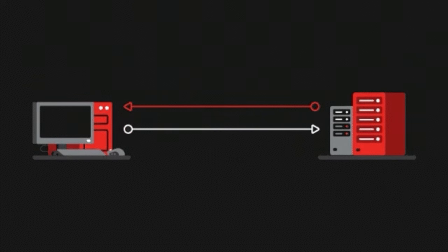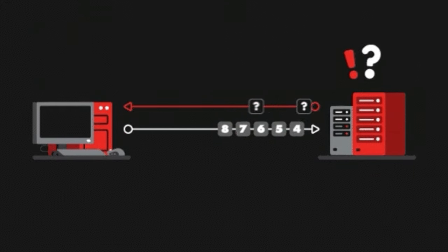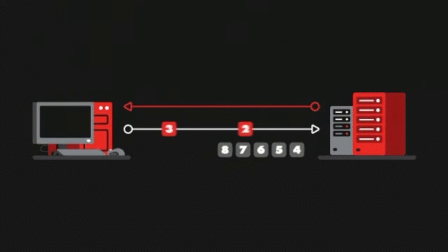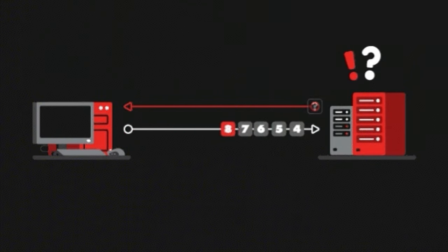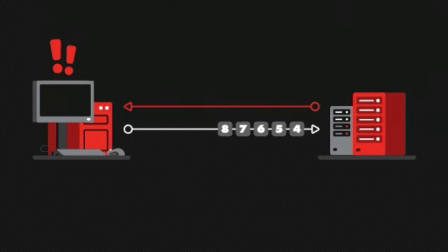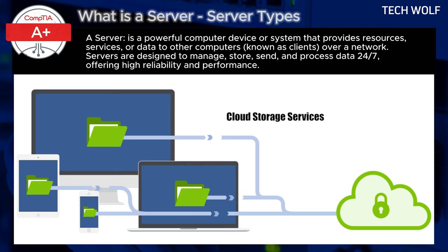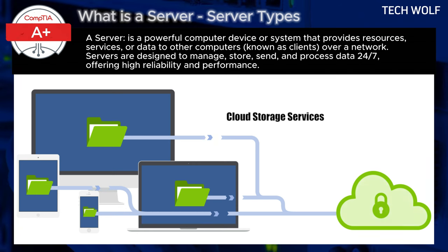Security servers focus on securing the network, managing firewalls, VPNs, intrusion detection, and other security protocols. Streaming servers deliver live or pre-recorded streaming media like video or audio to client devices over the internet. Load balancer servers distribute network traffic across multiple servers to optimize performance and ensure availability. These are the main types of servers, though many can be combined or tailored for specific uses based on an organization's needs.